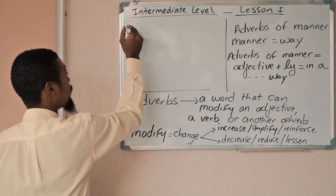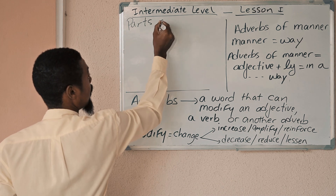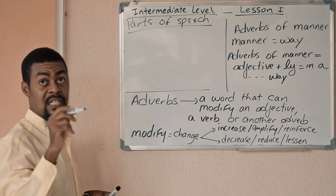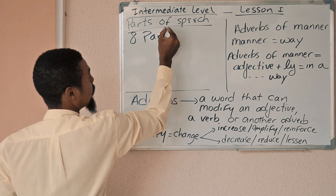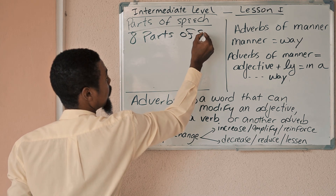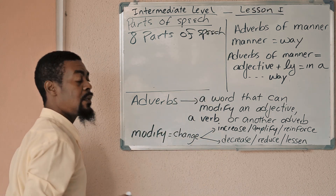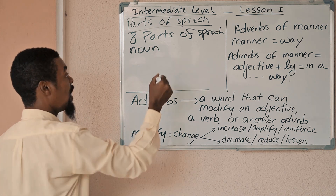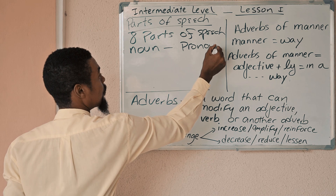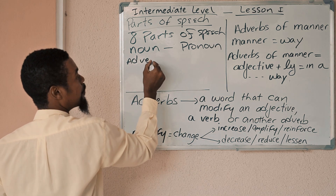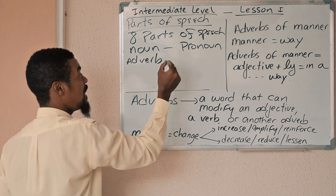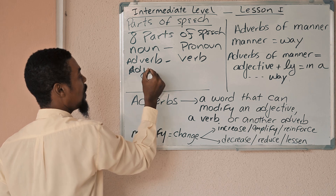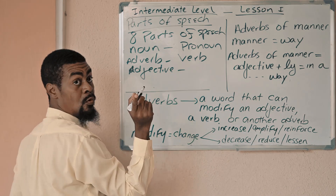Parts of speech. You remember this. Parts of speech — there are basically eight parts of speech. A word can be a noun. A word can be a pronoun. A word can be an adverb. A word can be a verb. A word can be an adjective.